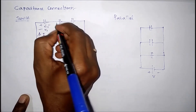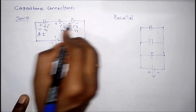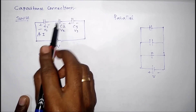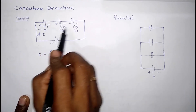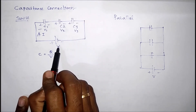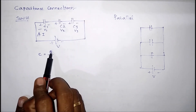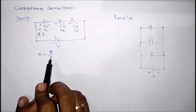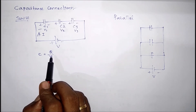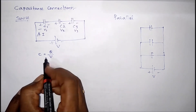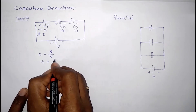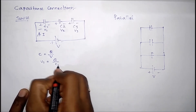The voltages across the capacitors are V1, V2, and V3 respectively with the corresponding plus-minus polarities. The voltage across C1 is V1, the voltage across C2 is V2, and the voltage across C3 is V3. The applied voltage V equals Q divided by V, where Q is the charge and V is the voltage. The voltage across capacitor one is V1 equal to Q divided by C1.